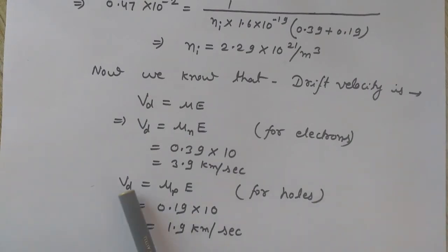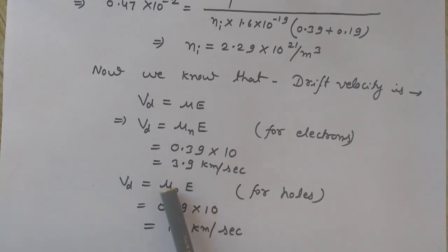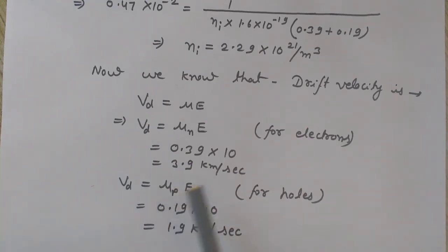Similarly I can calculate the drift velocity for holes. Velocity drift for holes is mu_p into E, electric field into the mobility of holes. So we know the values, mu_p is given, E is also given, so I get 1.9 kilometer per second. Here we see that the drift velocity of holes is lesser than the drift velocity of electrons.